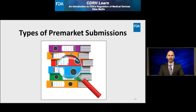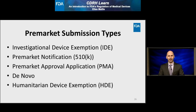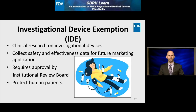The five most common types of pre-market submissions are: Investigational Device Exemption, Pre-Market Notification, Pre-Market Approval Application, De Novo, and Humanitarian Device Exemption. The Investigational Device Exemption, or IDE, is the one submission where you are not asking to get your product to market. Instead, you're asking for FDA approval to conduct clinical research on your investigational device, collecting clinical safety and effectiveness evidence to include in a future marketing application. Clinical studies typically require FDA approval as well as approval by an Institutional Review Board, with the goal of protecting patient safety.